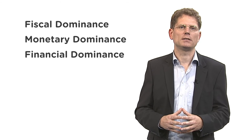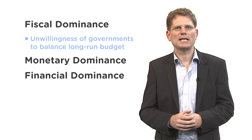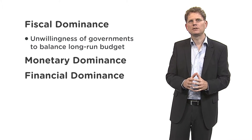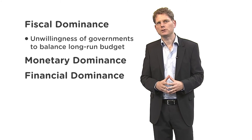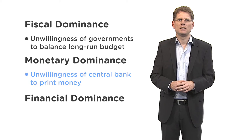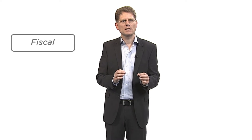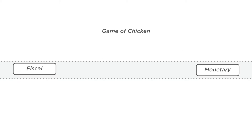It is useful to distinguish between three forms of dominance: fiscal dominance, monetary dominance, and financial dominance. Fiscal dominance refers to the unwillingness of the government to balance its long-run budget. One way out is to print more money to balance the budget through inflation. But under monetary dominance, the central bank is unwilling to print more money to balance the budget. Fiscal authorities — the government — and monetary authorities — the central bank — play a game of chicken.